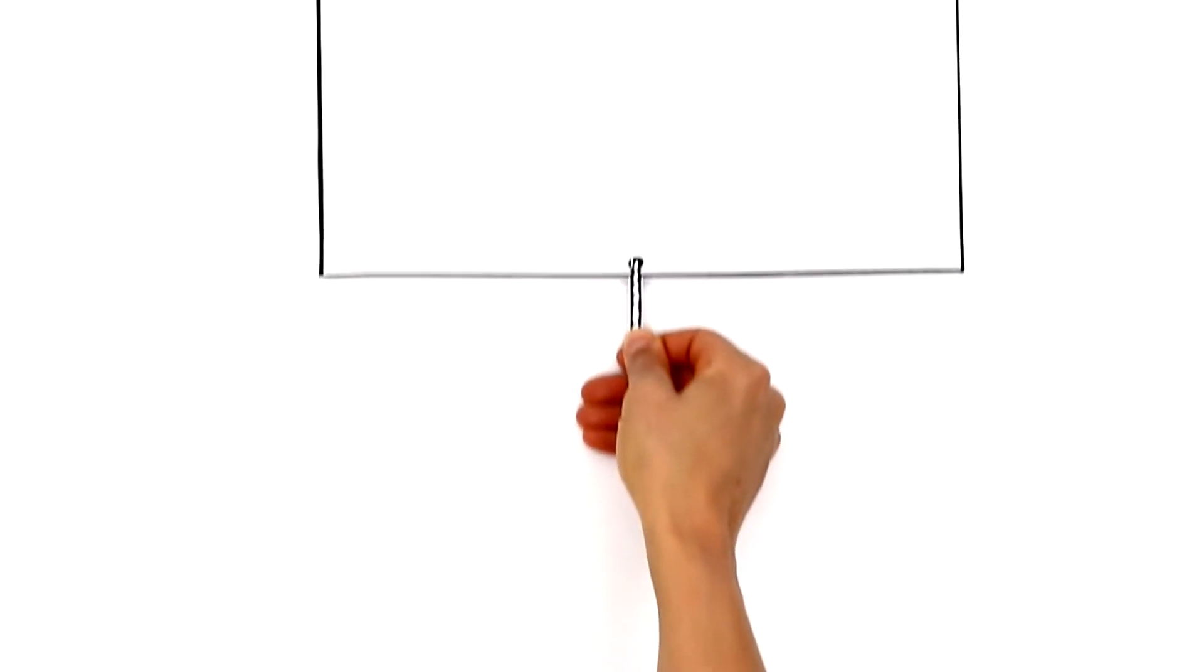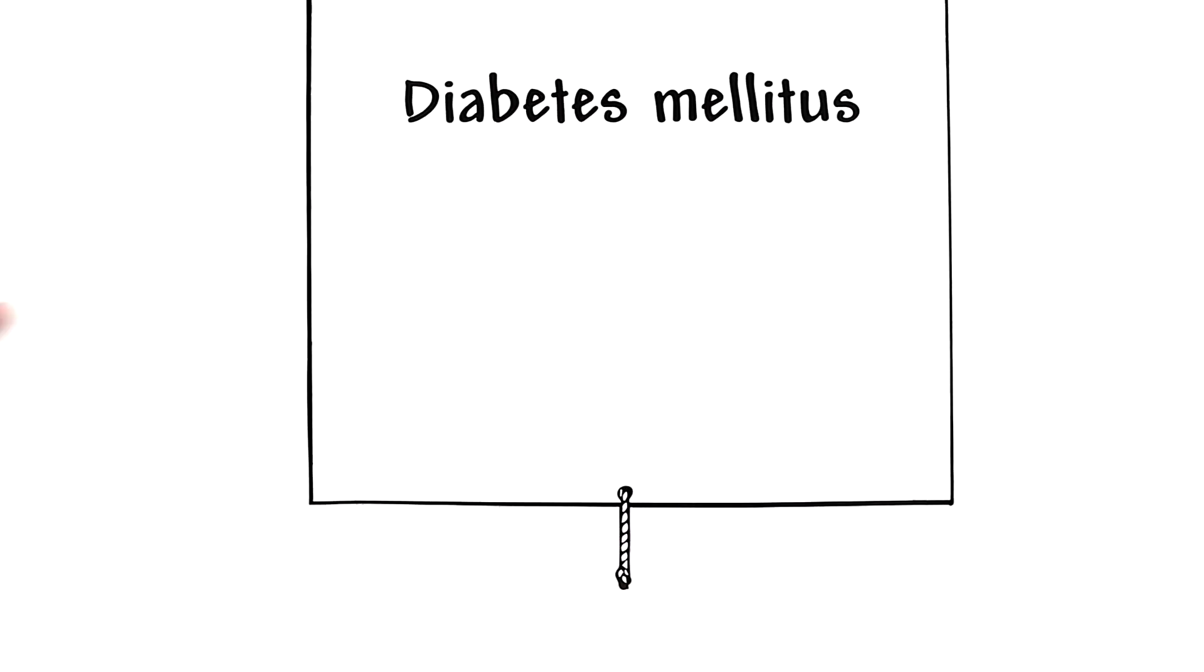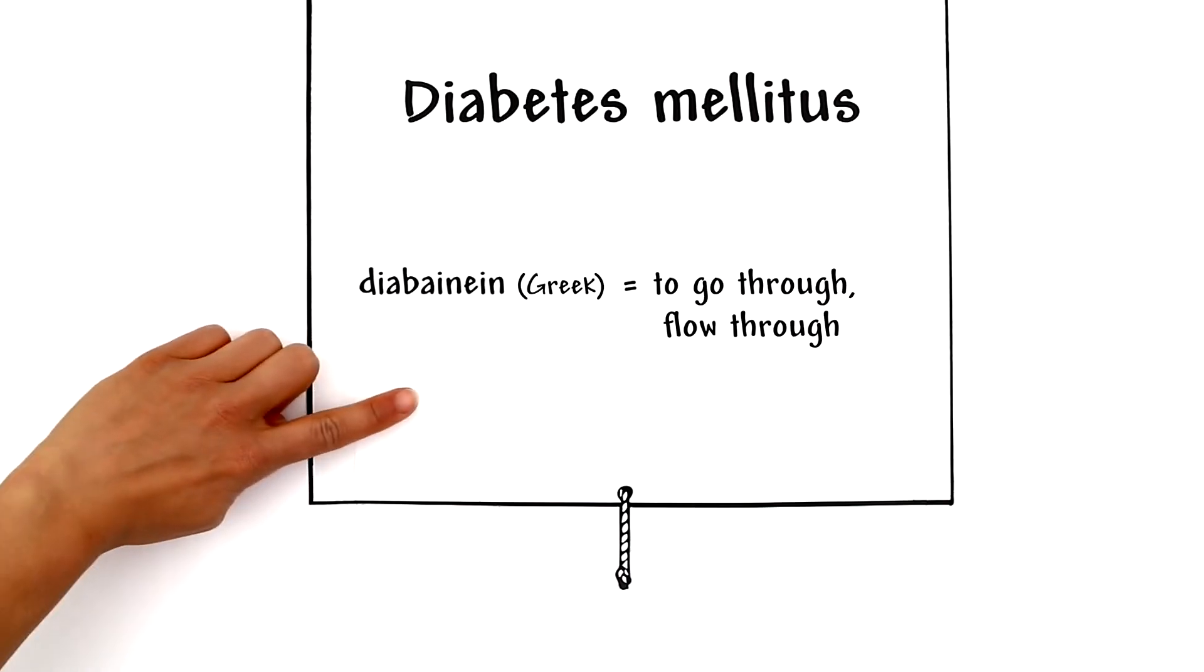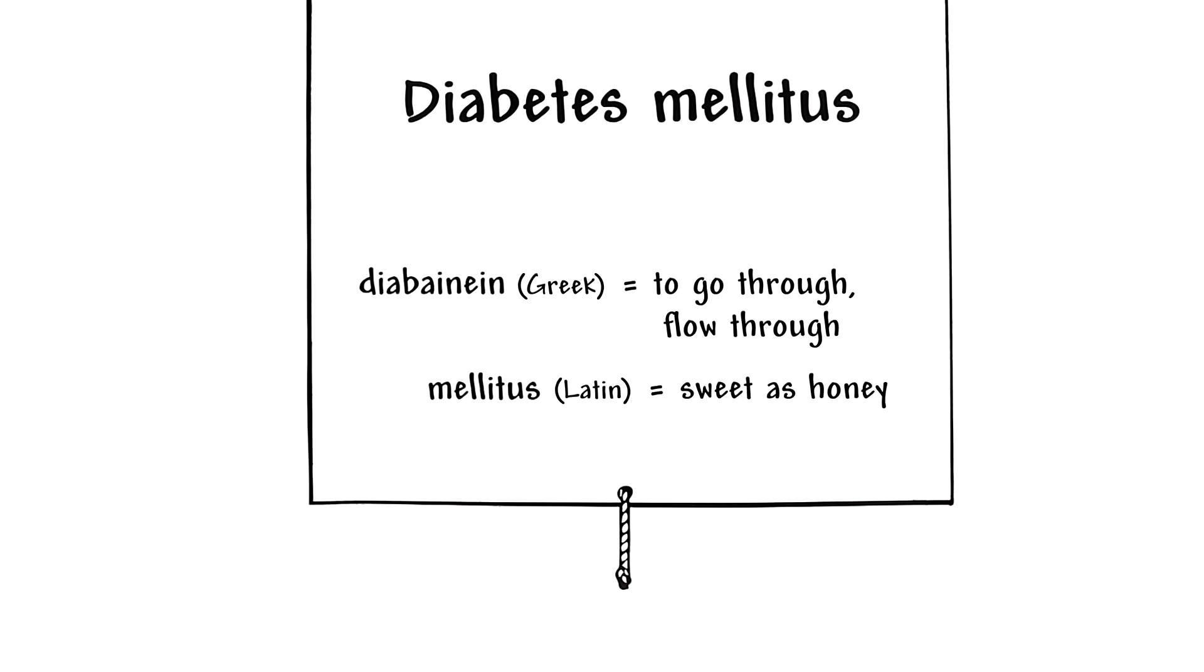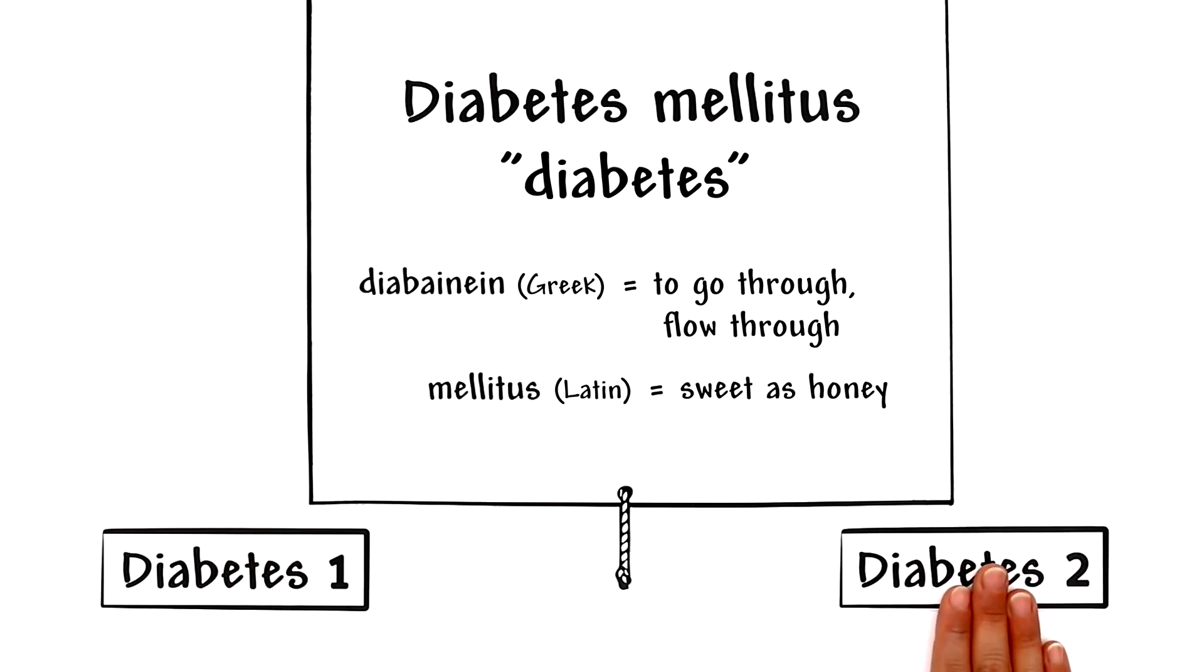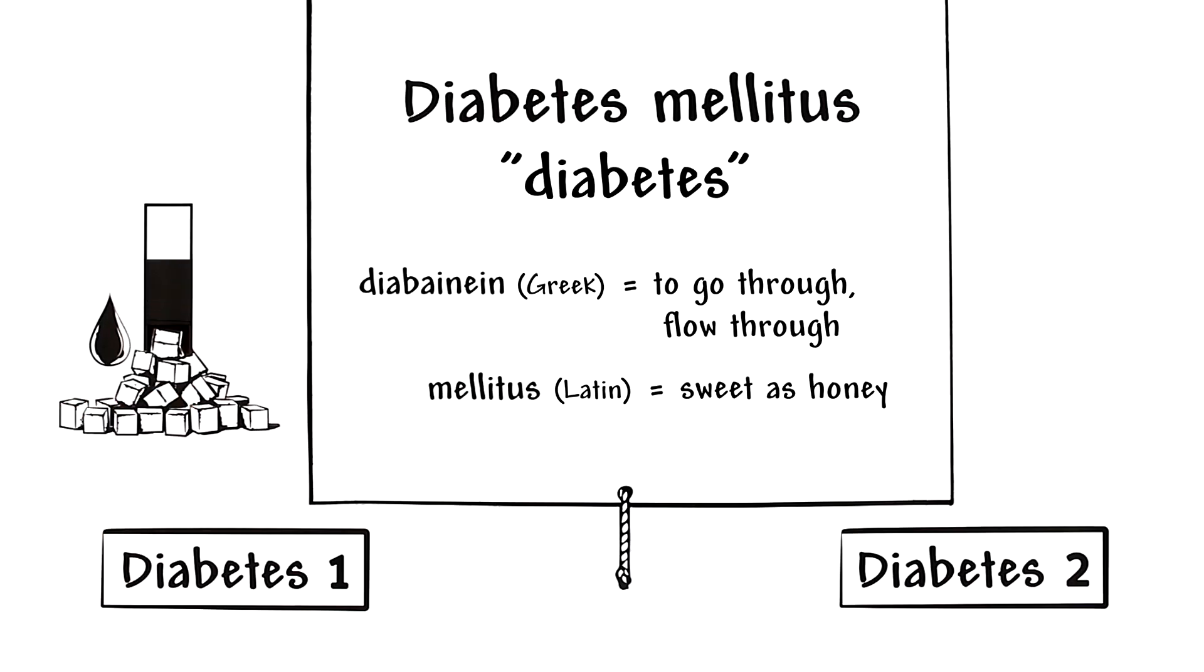The medical term diabetes mellitus comes from the Greek word diabanine, meaning to go through or flow through, and from the Latin word mellitus, meaning sweet as honey. In everyday language, this metabolic condition is called diabetes. It usually occurs in the form of type 1 diabetes and type 2 diabetes and is shown as an excessive amount of sugar in the blood.